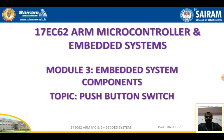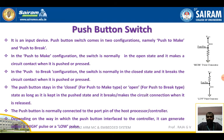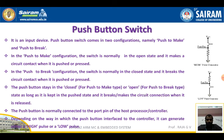Next, we are going to talk about the push button. It is an input device. A push button switch comes in two configurations: push to make and push to break. In the push to make configuration, the switch is normally in the open state and it makes the circuit contact when it is pushed or pressed. In the push to break configuration, the switch is normally in the closed state and it breaks the circuit contact when it is pushed or pressed. These are the two types of switch configurations.